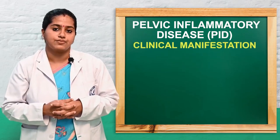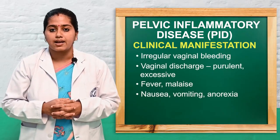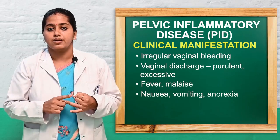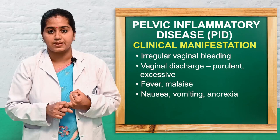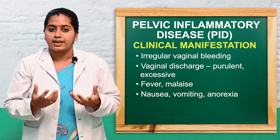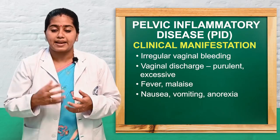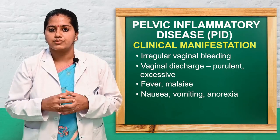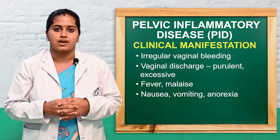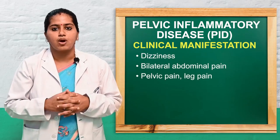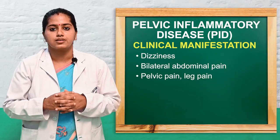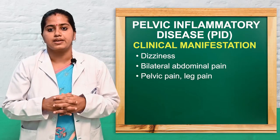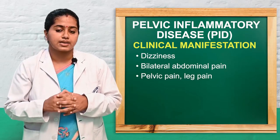Clinical manifestations include: irregular vaginal bleeding, menstrual bleeding, purulent vaginal discharge, excessive high body temperature and fever, malaise — the feeling of being sick — dizziness, nausea, vomiting, bilateral abdominal pain, pelvic pain, leg pain, and flank pain. These are the major clinical manifestations.